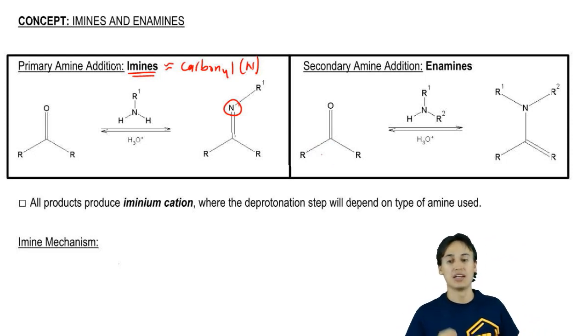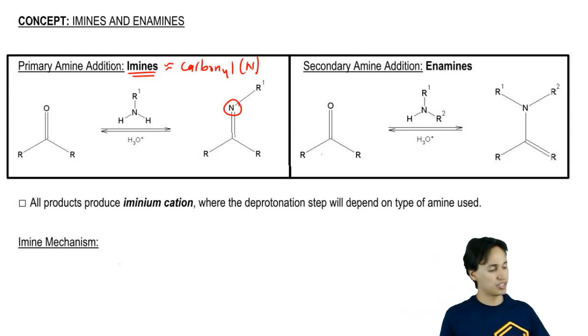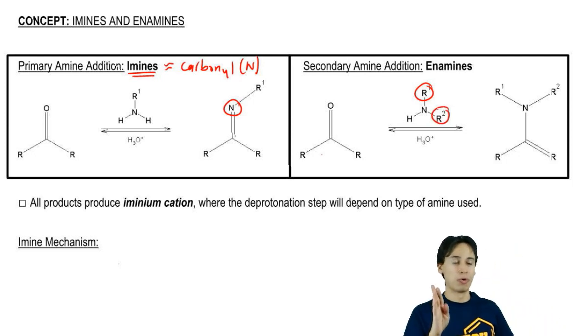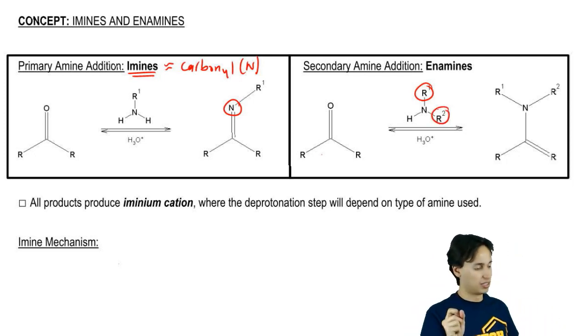Notice that when I react a secondary amine, I get a different looking compound. This amine has two R groups. Instead of getting the double bond directly on the N, I actually get it down towards one of the R groups.